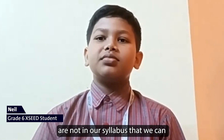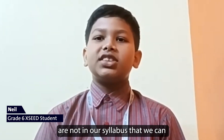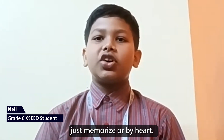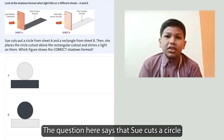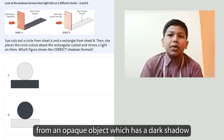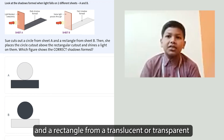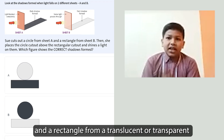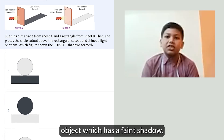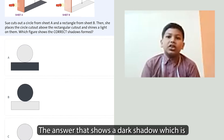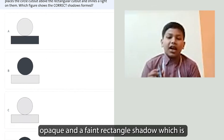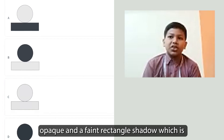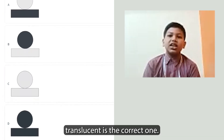The question was not in a syllabus we can memorize or learn by heart. It says you cut a circle from an opaque object, which has a dark shadow, and a rectangle from a translucent or transparent object, which has a faint shadow. So the answer showing a dark circle shadow (opaque) and a faint rectangle shadow (translucent) is the correct one.